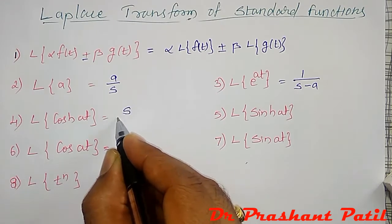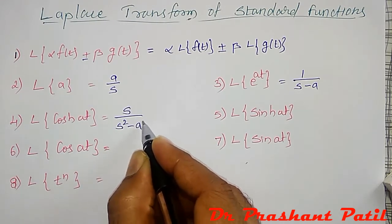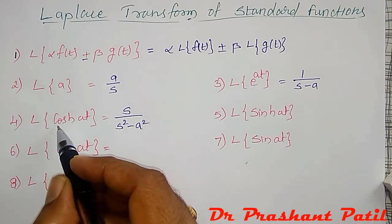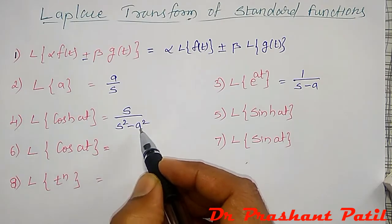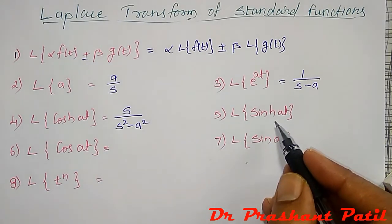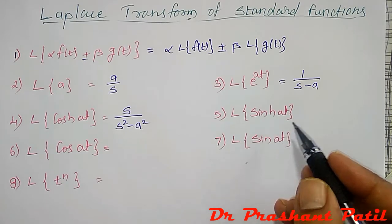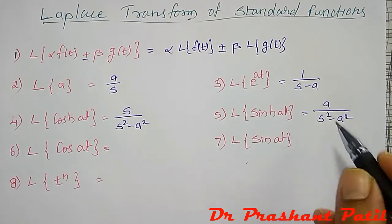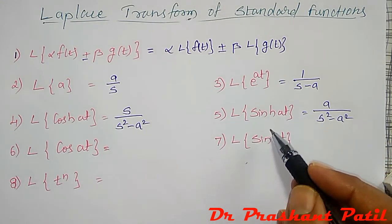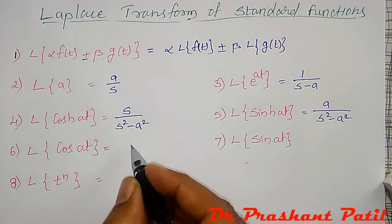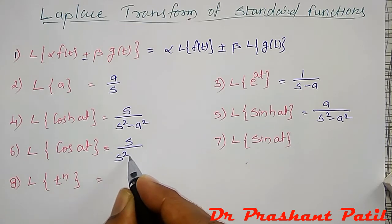For cosh(at), since it is hyperbolic, the denominator becomes s squared minus a squared. For sinh(at), the Laplace transform is a divided by (s squared minus a squared), where a is the coefficient of t. For hyperbolic functions, the denominator has minus a squared.